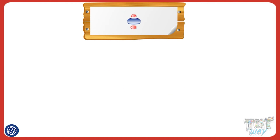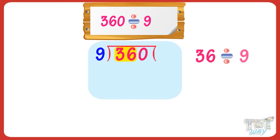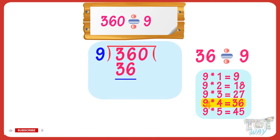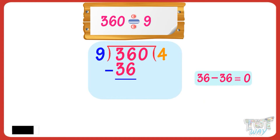Let's see more examples like this. We have to divide 360 by 9. We cannot divide the first digit of the dividend, that is 3, by 9, as it's smaller than the divisor. So, we take the next two digits of the dividend, that is 36. Now, which multiple of 9 is closest to 36? 9 multiplied with 4 is 36. So, write 36 below 36 and write 4 in the quotient, and subtract 36 from the first two digits of the dividend. We are left with 0.